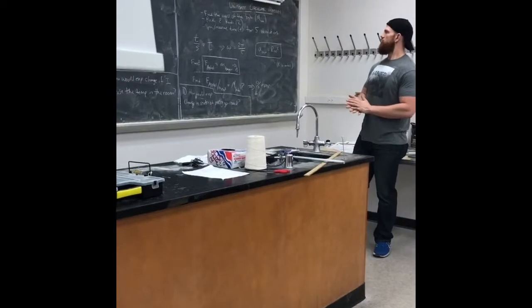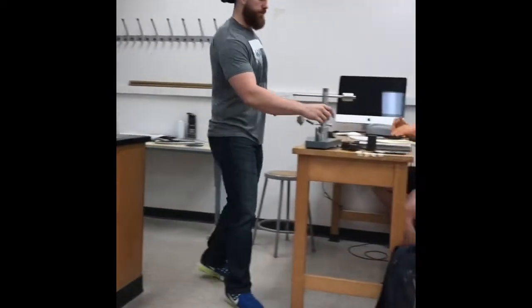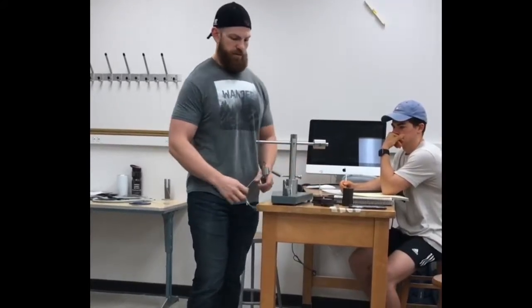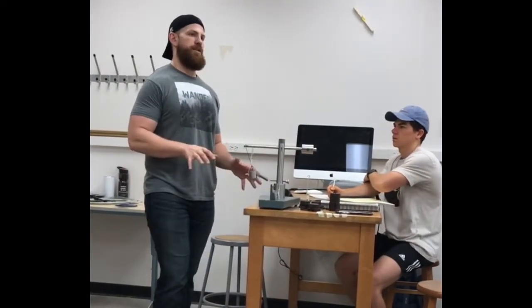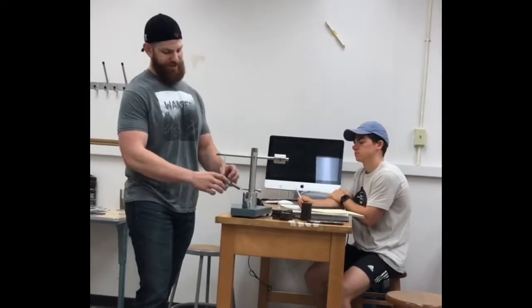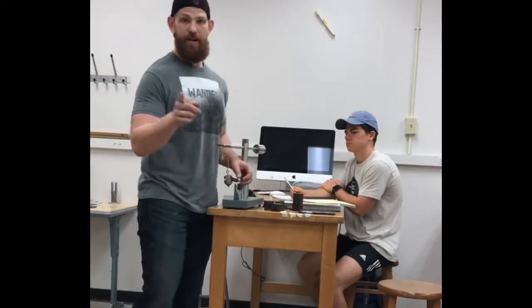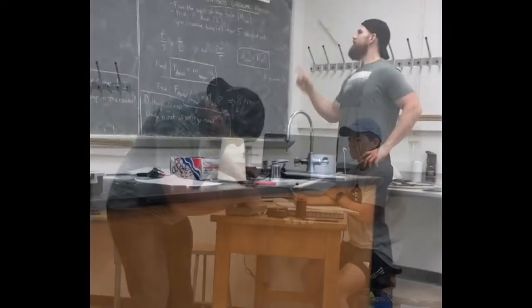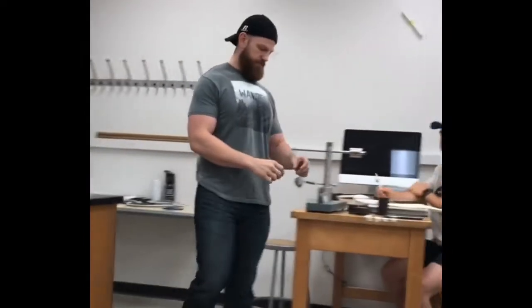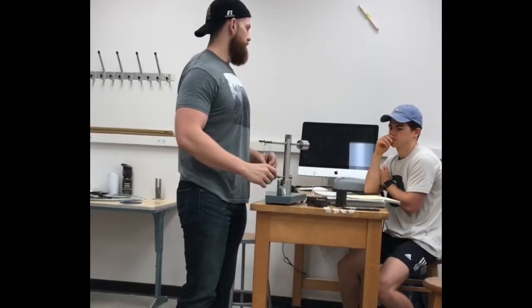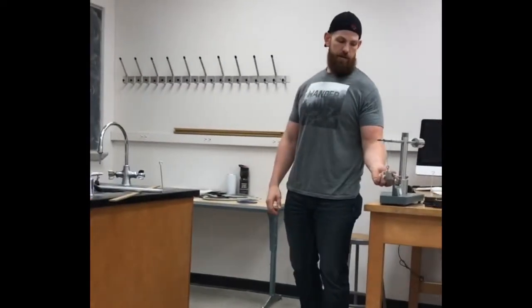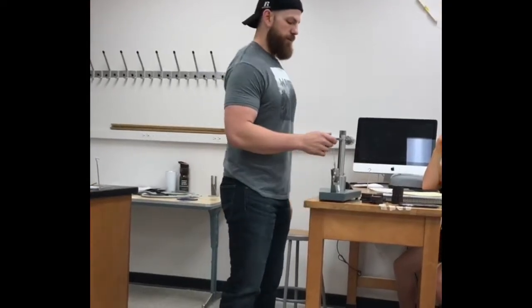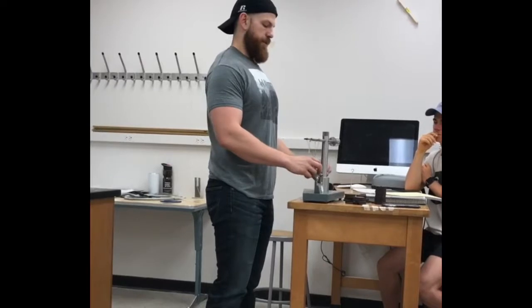The second experiment is uniform circular motion. We're going to use a rotational device, as you can see on the table, to calculate the laws of rotational motion. The first step is to disconnect the bob — just this metal part — and find its mass on one of the triple beam balances around the room. Once you've done that, reconnect it just like you see it.